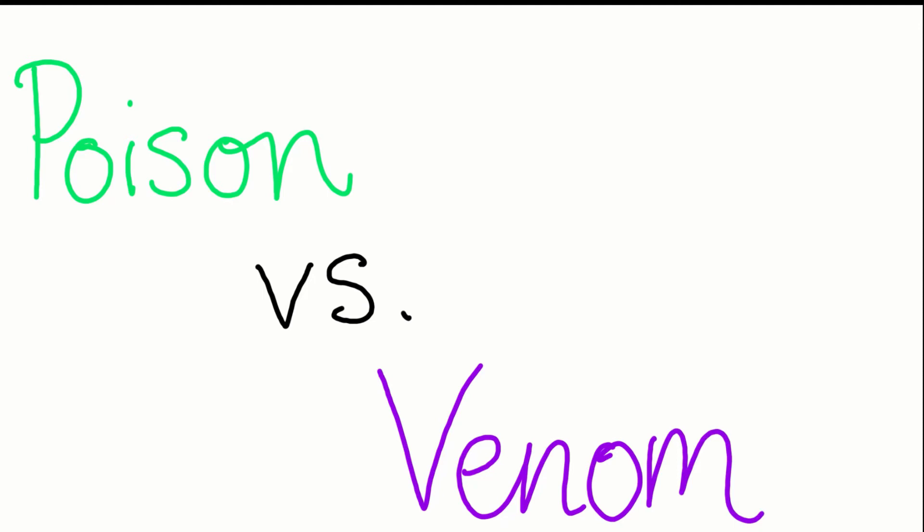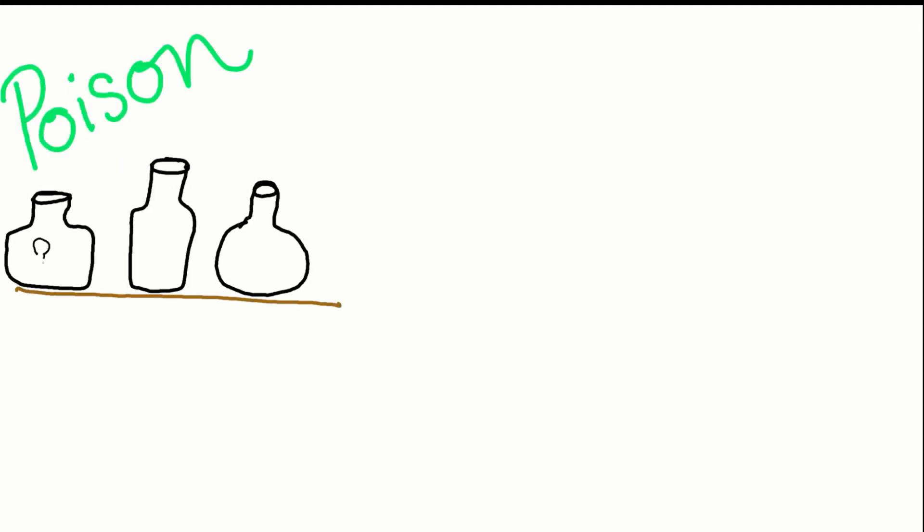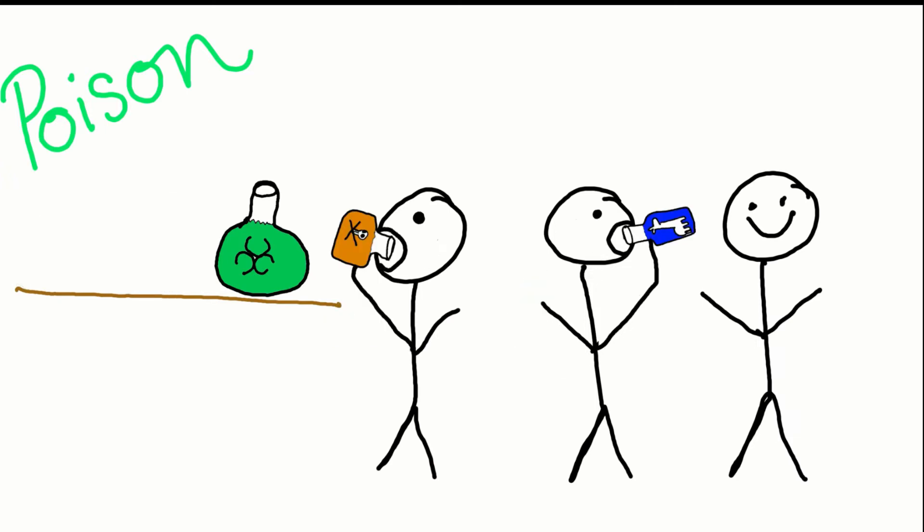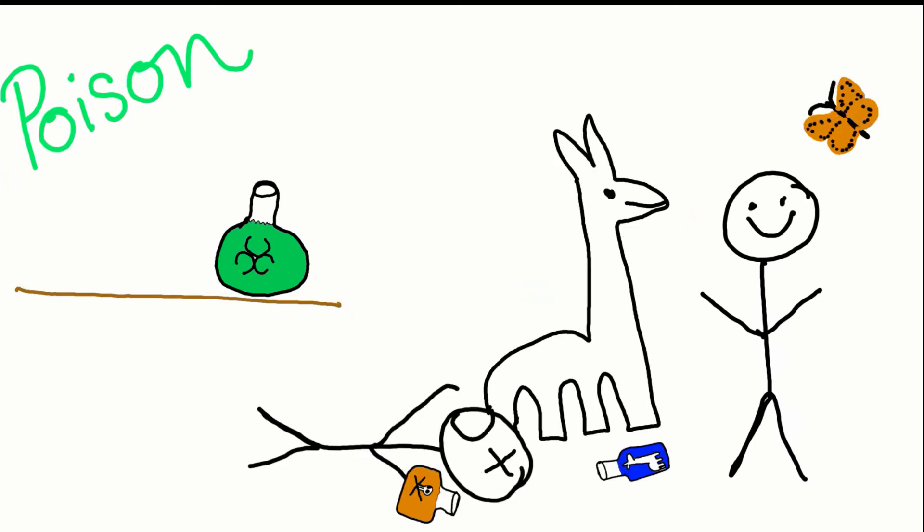I'm sure that most of us have seen a cartoon with a villain and a vial of poison. Well, this would be a correct way to think of a poisonous creature. The jar of poison cannot hurt you sitting on the shelf, but if you drink it you will suffer the consequences.